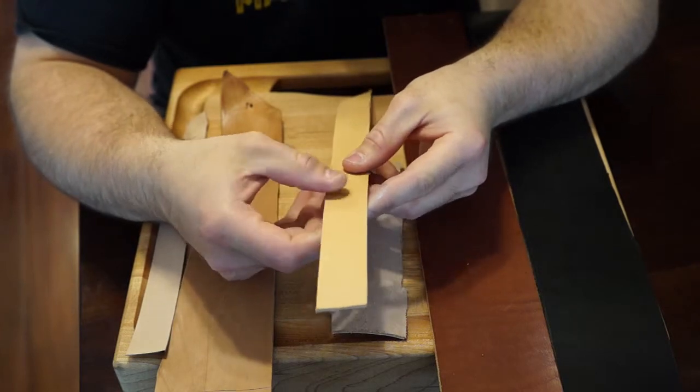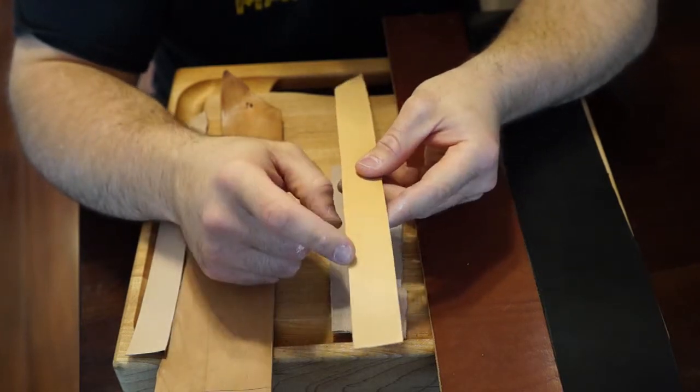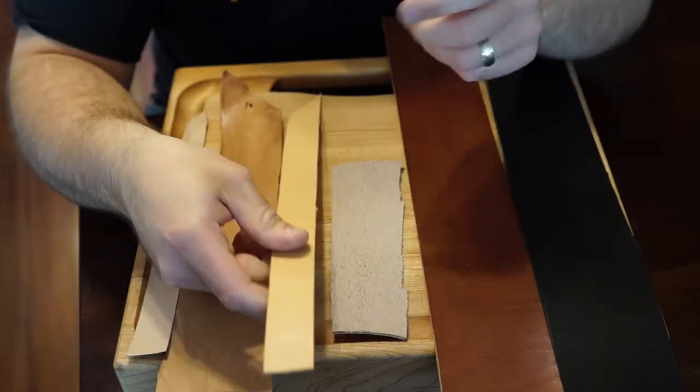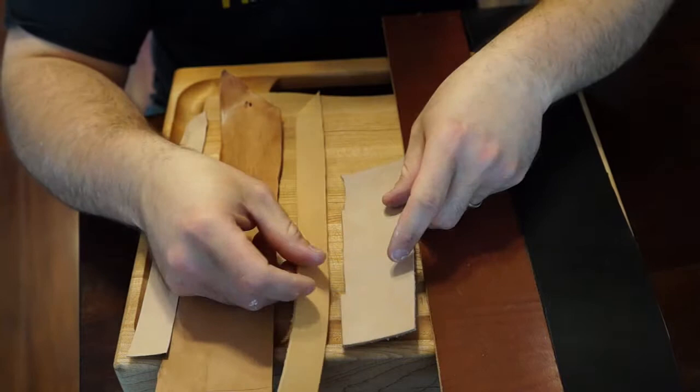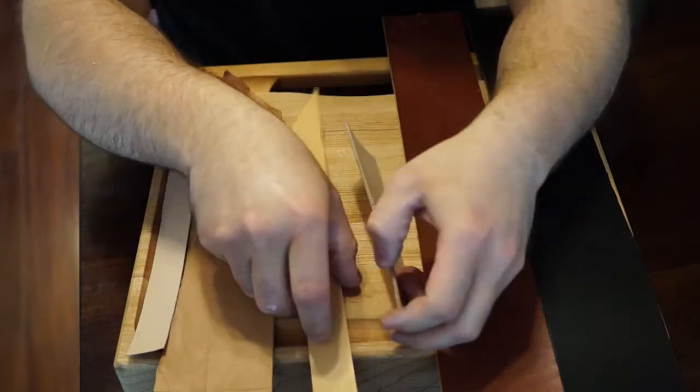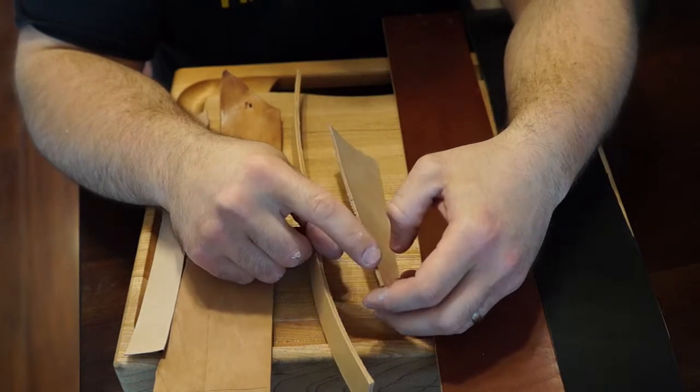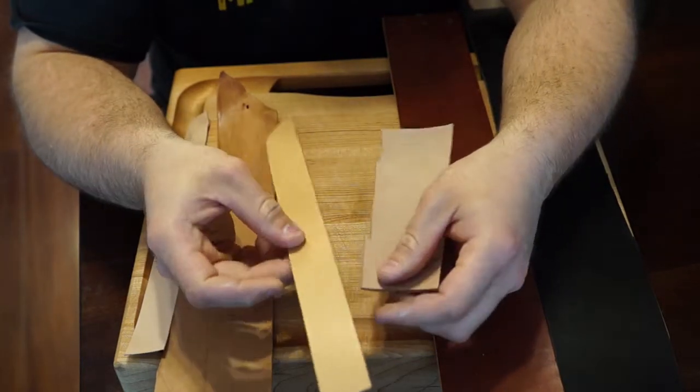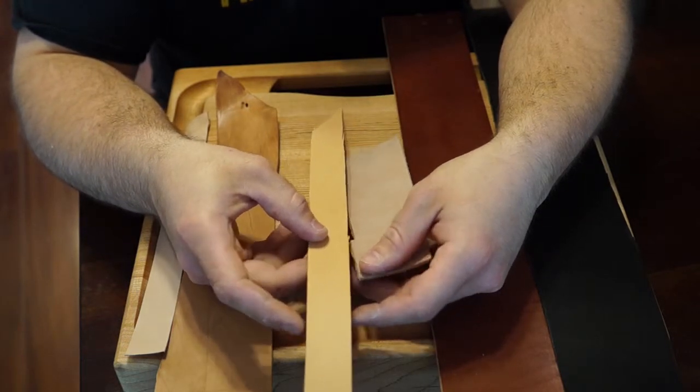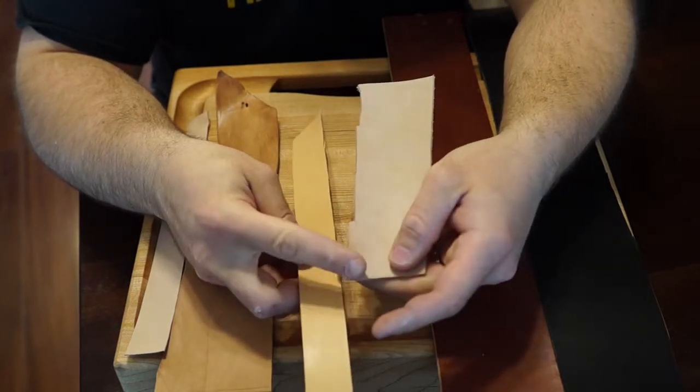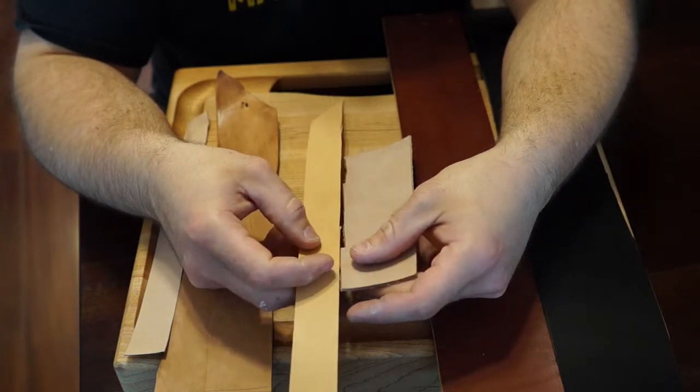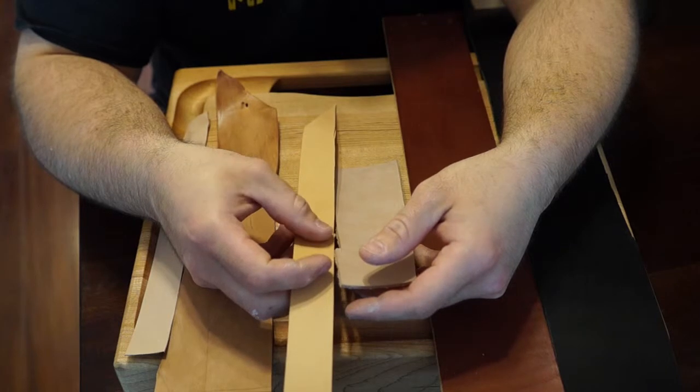I actually made a weightlifting belt out of the double shoulder and this is just like a scrap piece left. This is I believe eight to ten ounce and this is five to seven ounce. The way that this will take like a diamond spray or an emulsion is, I mean it's night and day compared to this. The way that they dry, the way that they'll take like wax and stain or leather dye, again night and day.